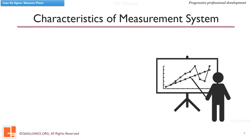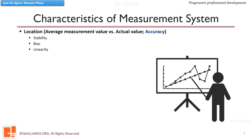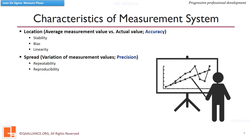Let us see the various characteristics of a measurement system which should be given attention when measurements are being repeated over time. For assessing the accuracy, the three characteristics — stability, bias, and linearity — should be studied. To assess the precision, repeatability and reproducibility should be studied. In this lesson we'll discuss at a glance what the terms stability, bias, and linearity mean.